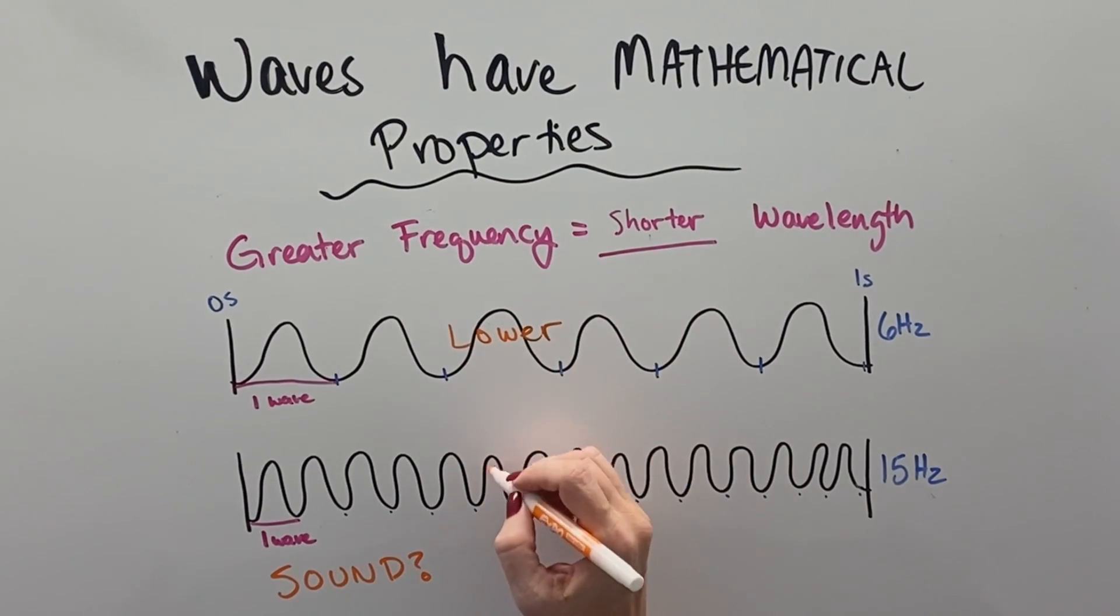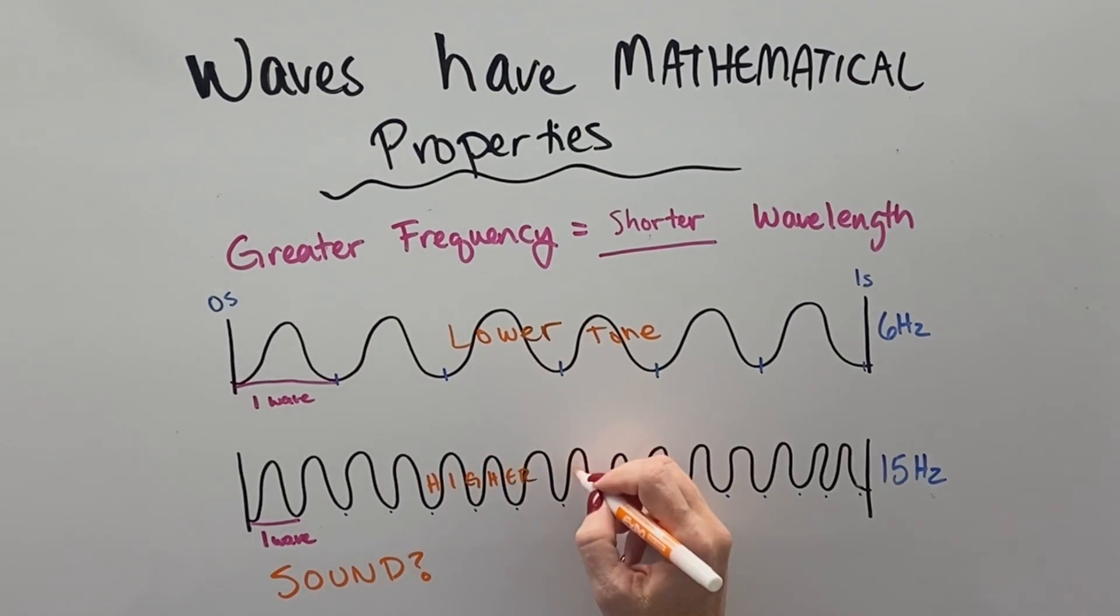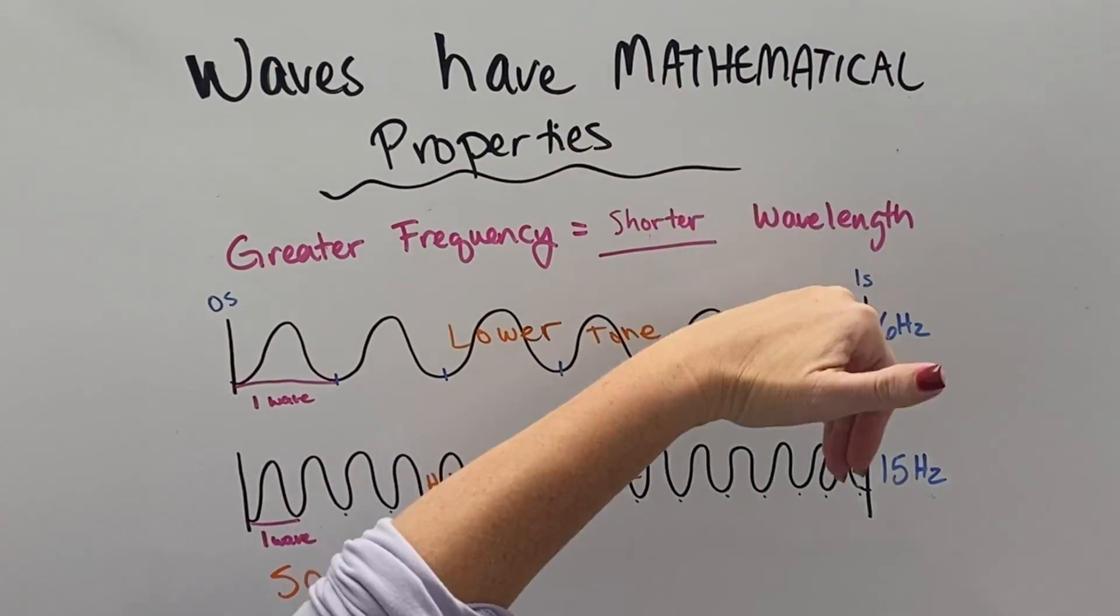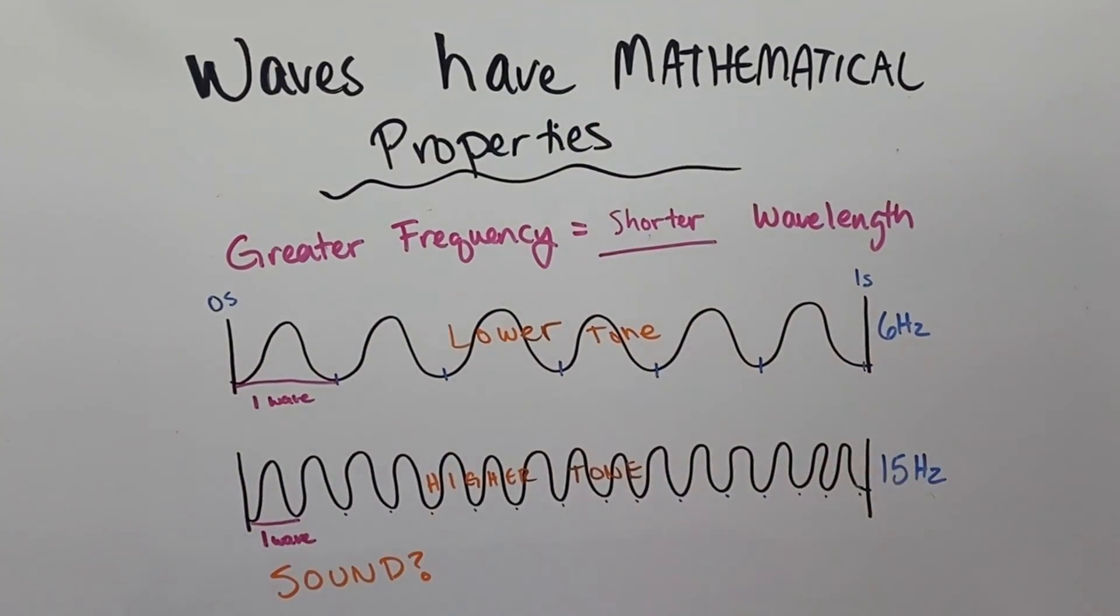And so things with a low frequency have a low tone and long waves. Higher frequency has high tones because those low waves move slow. And the fast waves move really fast, right? So higher frequencies have a higher sound and much shorter waves.